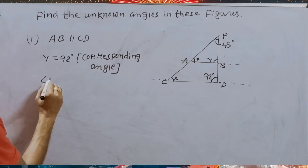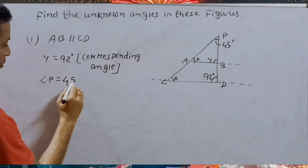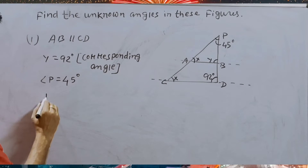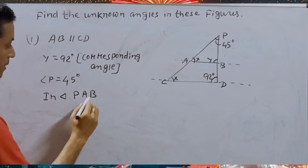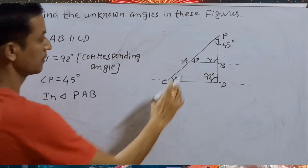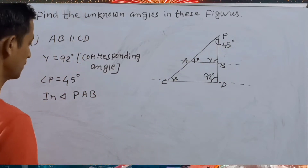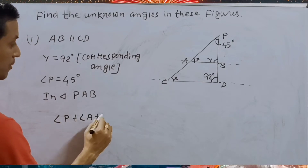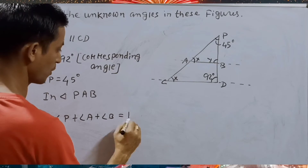Angle P is given as 45 degrees. In triangle PAB, the sum of angles P plus angle A plus angle B is equal to 180 degrees.